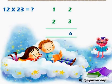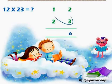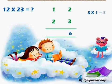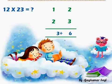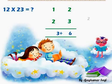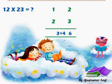Now we have to multiply crosswise all the digits. First we take 3 into 1 — 3 into 1 we get 3, so place 3 here. Then multiply crosswise 2 into 2 — 2 into 2 we get 4, place 4 here.